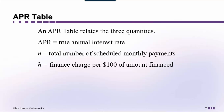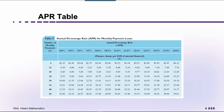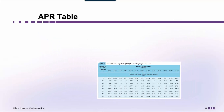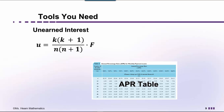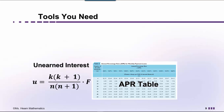APR tables do have their limitations. For example, what if the APR happens to be 8.2%, which doesn't appear on this table? In that case, there is a formula we can use, and I explain that in another video. But in this video, we're going to work an example where the finance charge is provided. So the APR table is the first tool that we need. The second tool is the unearned interest formula: U equals K times (K plus 1) over N times (N plus 1) times F.